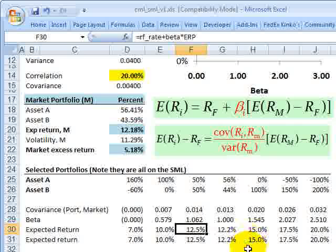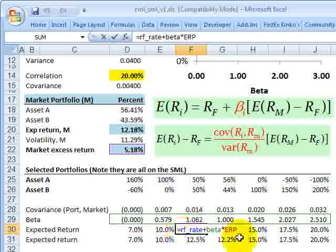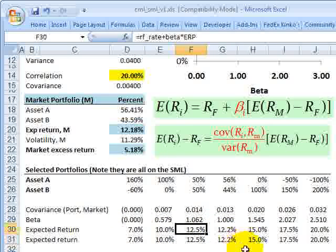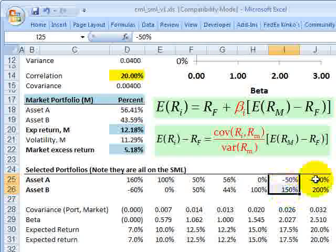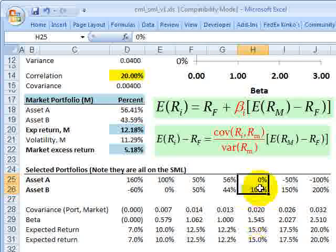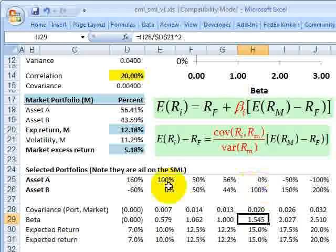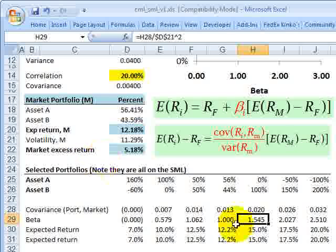So that's the formula for beta that gets computed right here. And then the expected return you can see just utilizes the capital asset pricing model. It's the risk free rate plus beta times the equity risk premium. And so any of these portfolios are on the security market line, any of these mixes of A and B, because the mix of A and B determines the covariance, which determines the beta of that particular portfolio to the market portfolio.